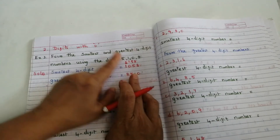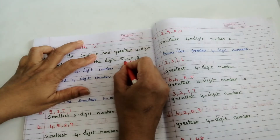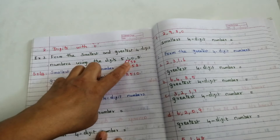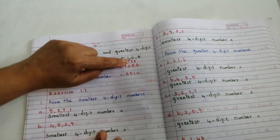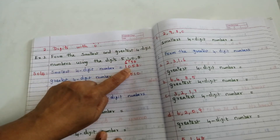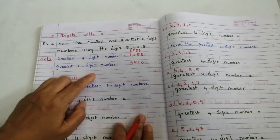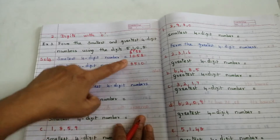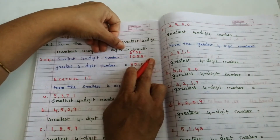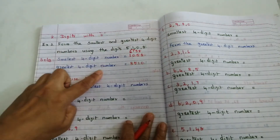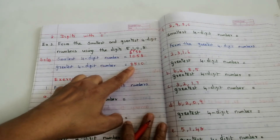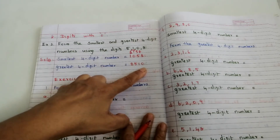To avoid this, we put zero in the second position: write 1 in the first position and 0 in the second position. So the smallest four-digit number is 1058. And the greatest four-digit number, arranged in descending order, is 8510.